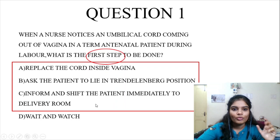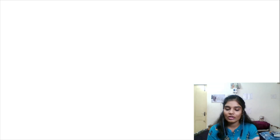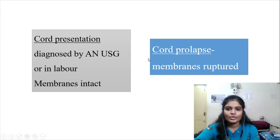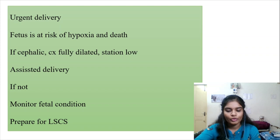What is cord presentation or cord prolapse? When the head is the presenting part, we say it is cephalic presentation. Similarly, when the cord occupies that position, we call it cord presentation. When the membranes are intact, it is cord presentation. When the membranes are ruptured, it is called cord prolapse. When the cord comes out, it gets exposed to a cool or dry environment, which stimulates the cord and leads to vasospasm, fetal hypoxia, and death.